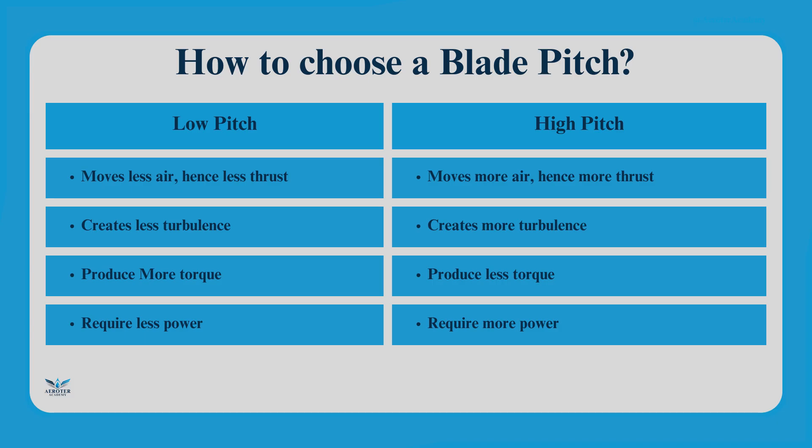Pitch is defined as the traveling distance for a single revolution of the propeller. Pitch refers to the angle of the blades and determines the power the propeller can produce. Low pitch moves less air, hence less thrust, creates less turbulence, produces more torque and requires less power. Whereas high pitch moves more air, hence more thrust, creates more turbulence, produces less torque and requires more power.